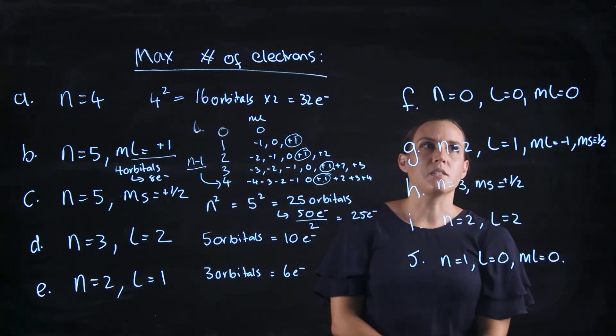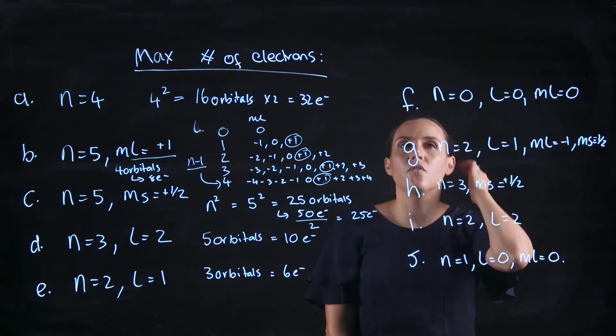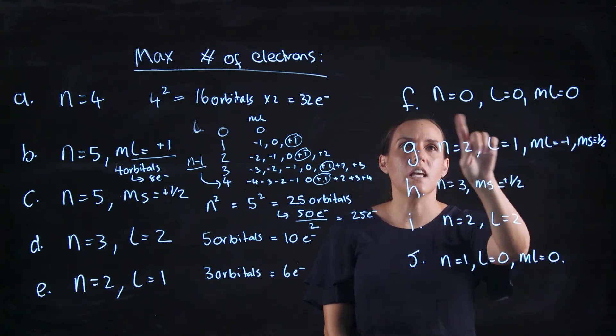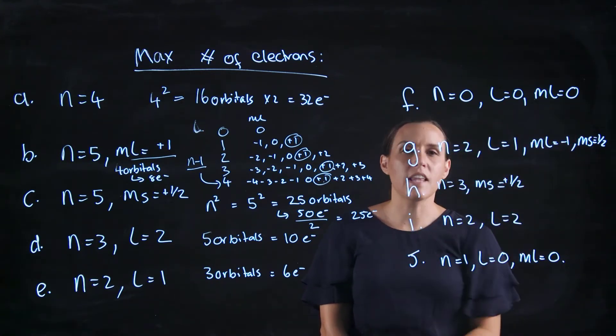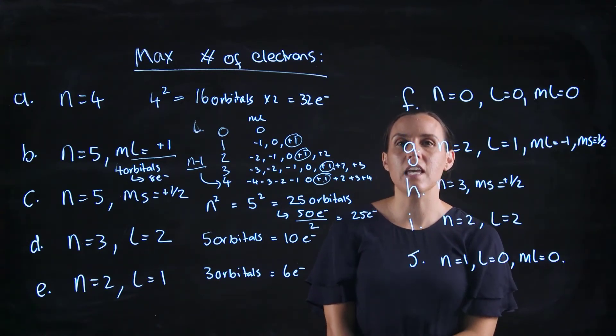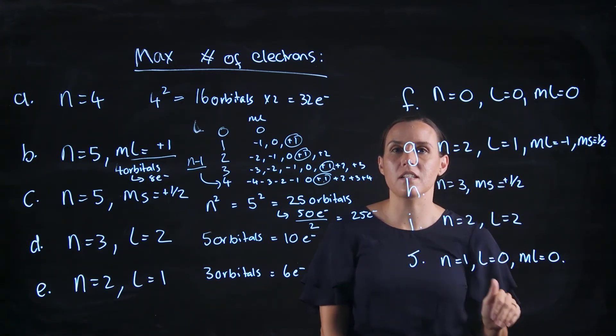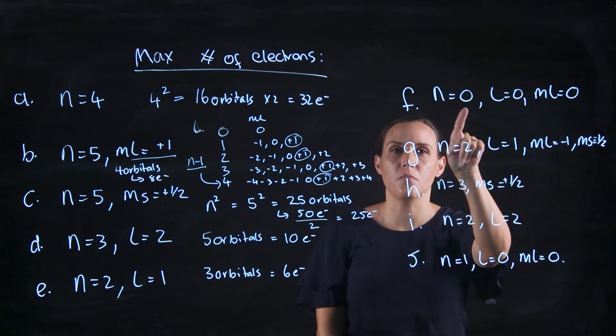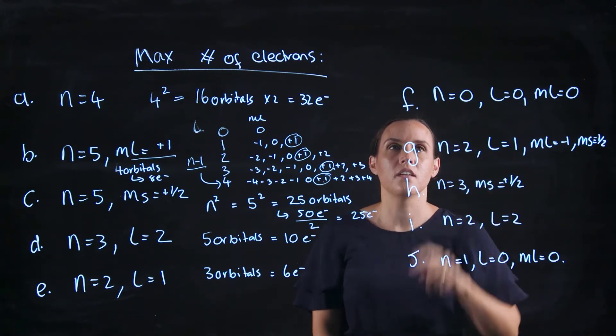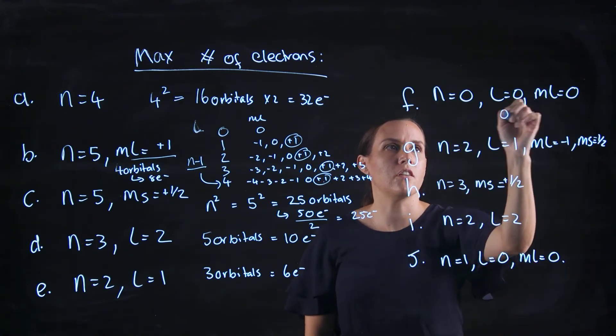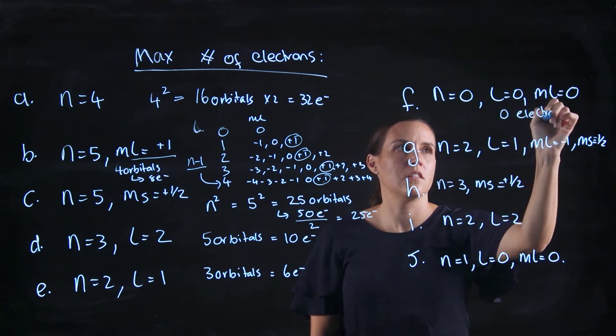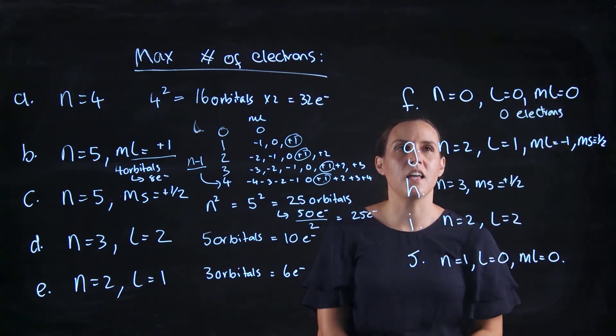So now we're looking at this one here. First of all with this one, n equals 0, that can't be possible. So remember I said the n value is the period on the periodic table? There is no 0 period. It starts at 1. So there would be 0 electrons because it's impossible.